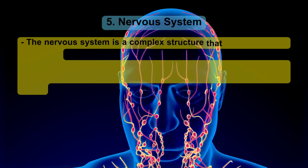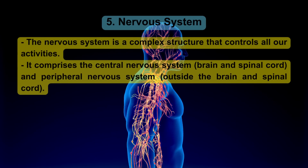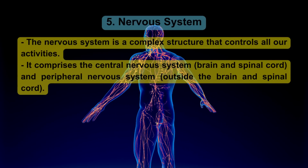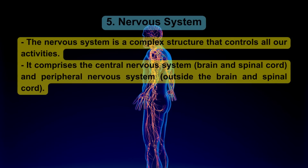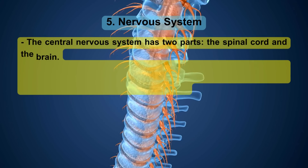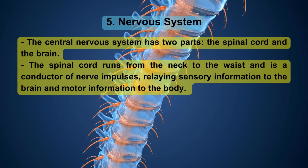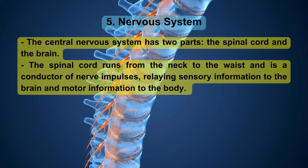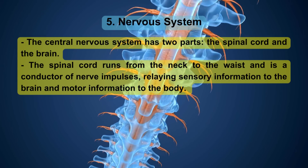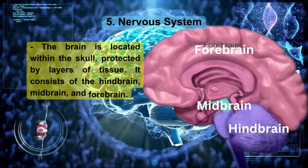The nervous system is a complex structure that controls all our activities. It comprises the central nervous system — brain and spinal cord — and the peripheral nervous system, which is outside the brain and spinal cord. The spinal cord runs from the neck to the waist and is a conductor of nerve impulses, relaying sensory information to the brain and motor information to the body. The brain is located within the skull, protected by layers of tissue.